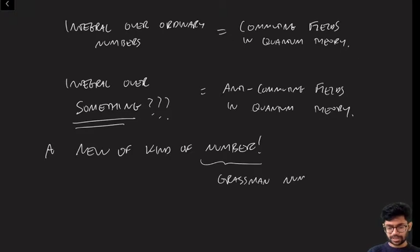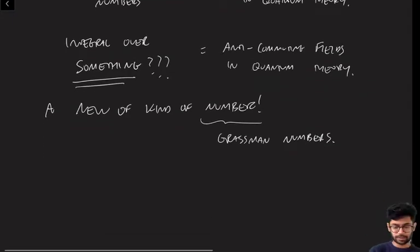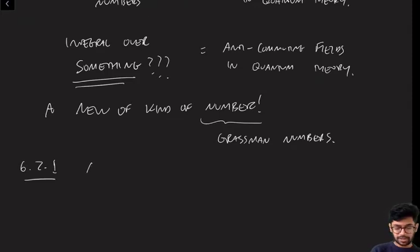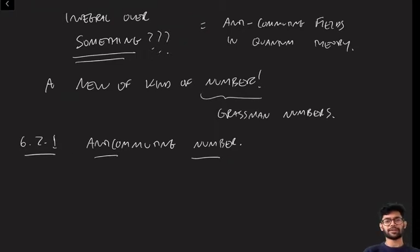In this lecture, we're going to pretty much develop the full theory of Grassmann numbers and their calculus. It turns out to be easier than normal numbers, and we'll see why. A Grassmann number is a kind of anti-commuting number. After all, we are trying to get a theory with anti-commuting operators in the quantum theory, so it seems reasonable that we should have a theory of anti-commuting numbers to do that.